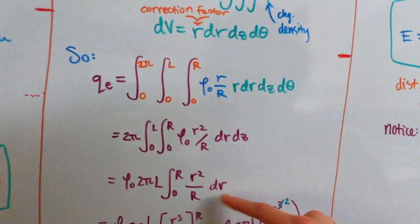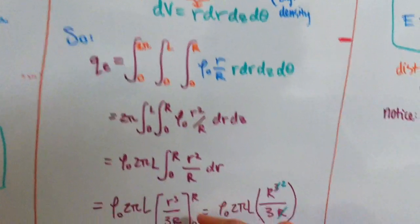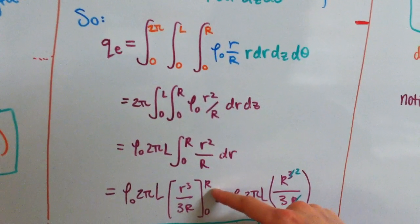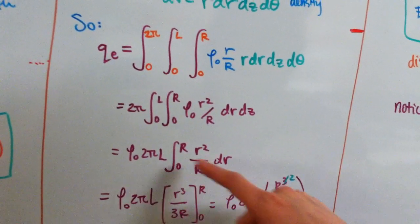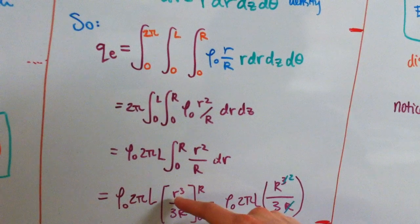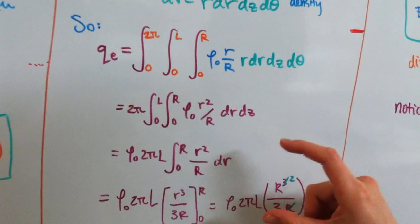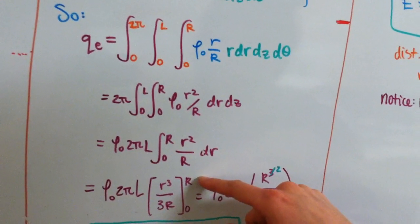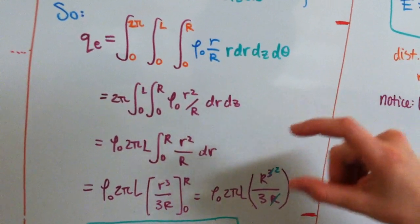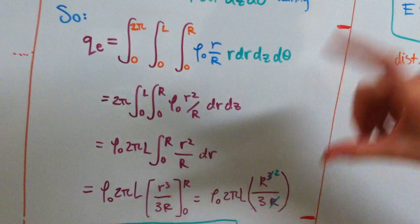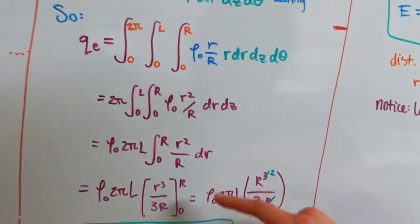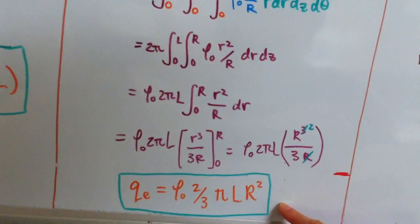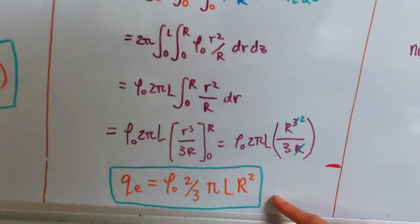And we solve for, take the integral of dr, and we get r cubed over 3r. Now, notice here that we're plugging in the big R into the little r for this calculus here. That's because the little r is the variable, the big R is the constant, which is the radius of our charged cylinder. The little r is just the variable for how far away we are from the center of that cylinder. So, we solve this out, get a little bit of cancellation, and we get QE enclosed charge is equal to rho naught 2/3 π L big R squared.